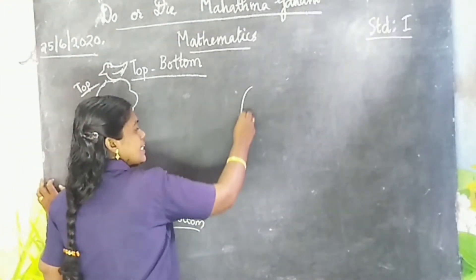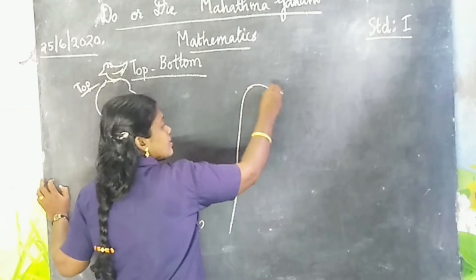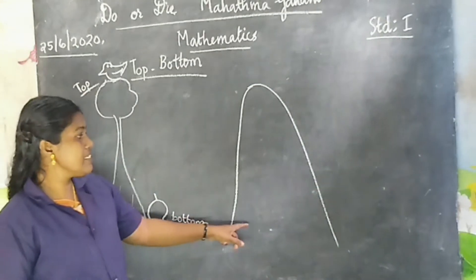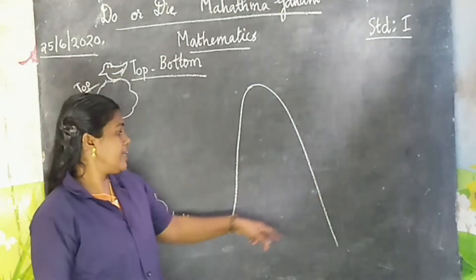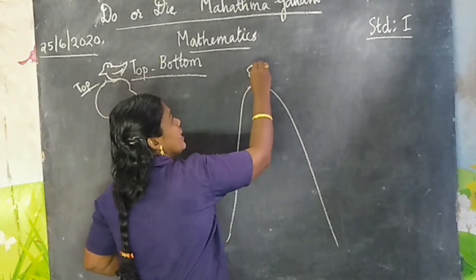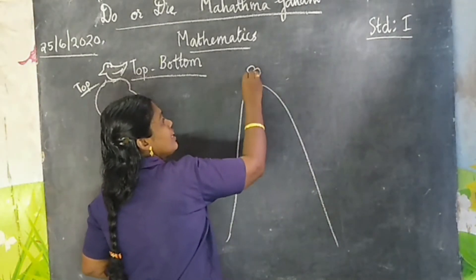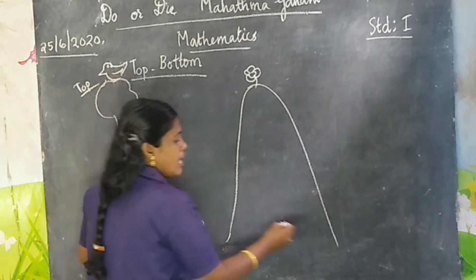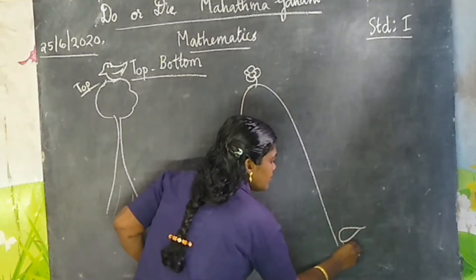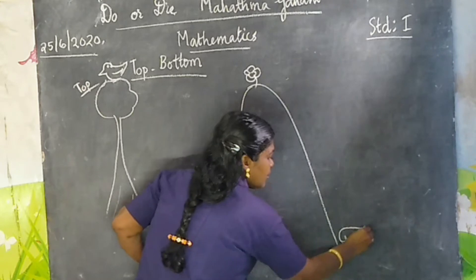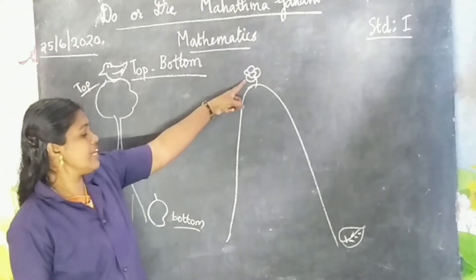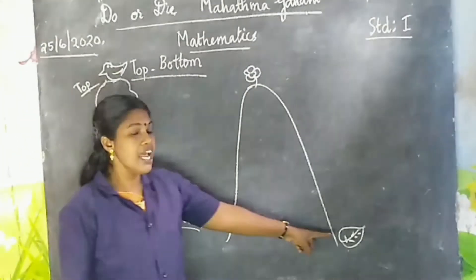Next example. Consider the hill. Hill means muda or mountain. Here a flower and here a leaf. A hill, a flower, and a leaf.